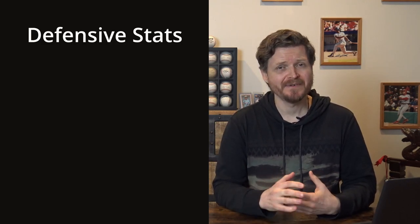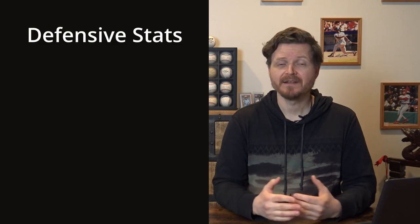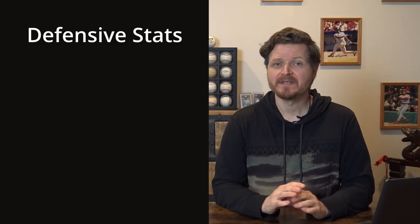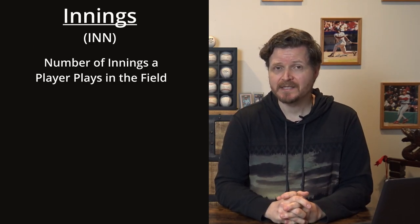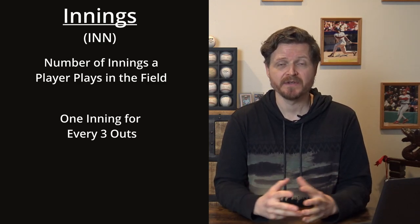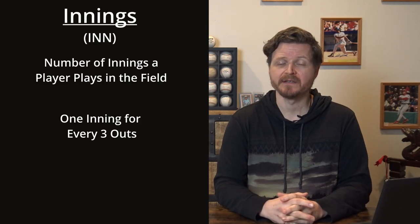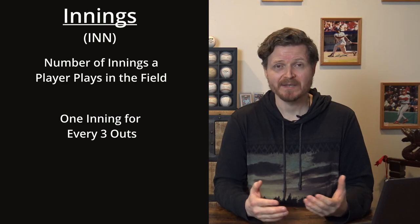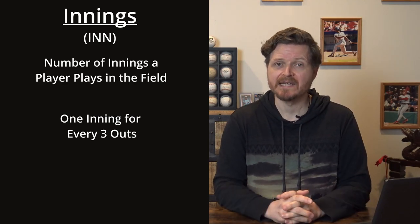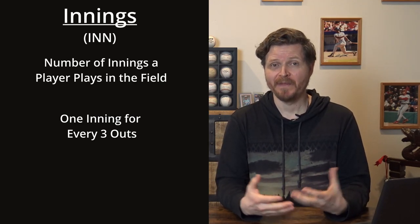Defensive stats are both traditionally very simple but also open to a lot of interpretation. Let's start with the basics. The simplest defensive stat is innings — the number of innings a player has played on the field. He gets one inning for every three outs recorded, so if he doesn't play a full inning he might get a third or two thirds of an inning, just like in pitching stats.